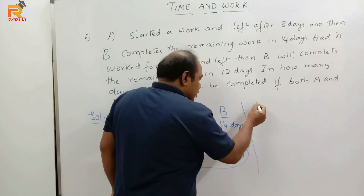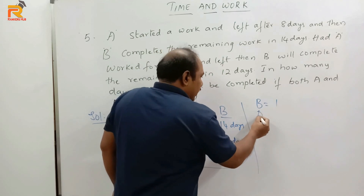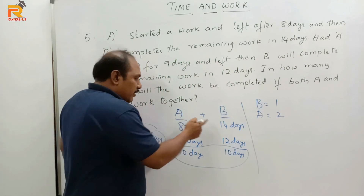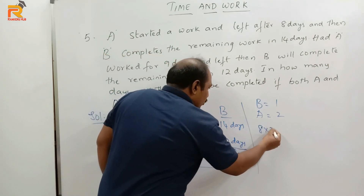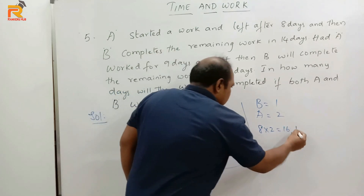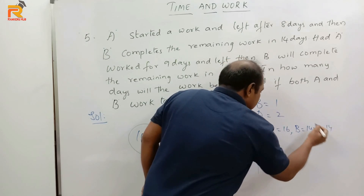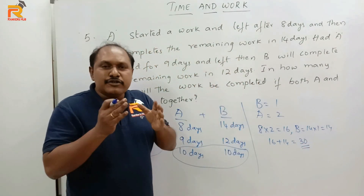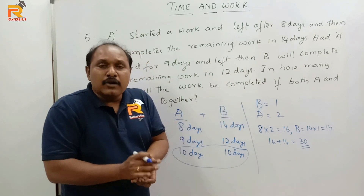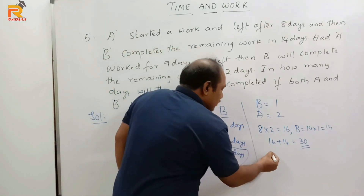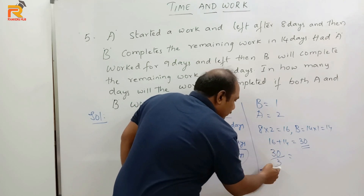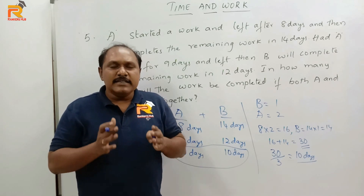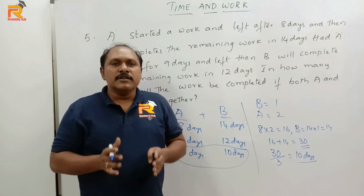The total work is to eat 30 chocolates, which should now be completed by A and B together. Together they eat 2 + 1 = 3 chocolates per day. To eat 30 chocolates, how many days will they take? 30 divided by 3 is 10 days. So if you can think like this, solving problems in Time and Work will become very simple. Thank you for watching. For more videos, subscribe to Rankers Hub.